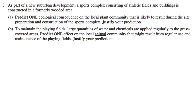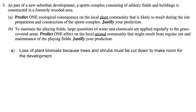Question 3. As part of a new suburban development, a sports complex is constructed in a formerly wooded area. Part A: Predict one ecological consequence on the local plant community likely to result during site preparation and construction, and justify your prediction. The most obvious consequence is that developers will be cutting down trees and clearing shrubs, resulting in a significant loss of biomass from the woodland community formerly in the area.